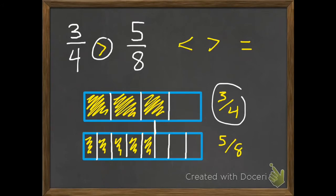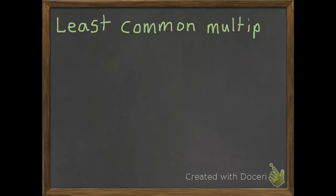Drawing pictures isn't the easiest all the time. So we need to have another strategy — I'll want you to use today. You might check with pictures or use that as a backup strategy. But today we're going to be using something called least common multiple, not to be confused with the greatest common factor that we've used the past couple days. If you forgot what a multiple is, go back to the first video of this chapter and it will give you a good reminder.